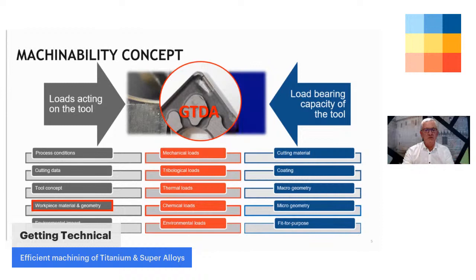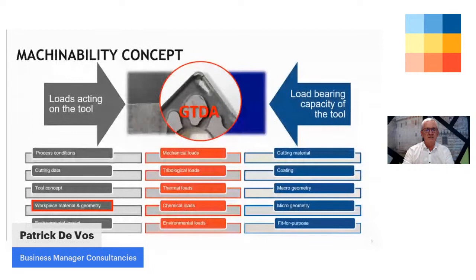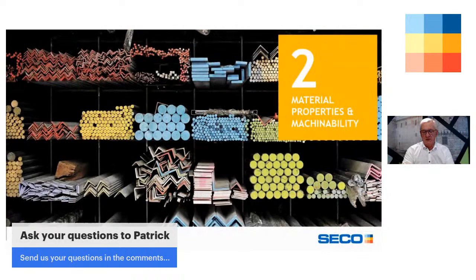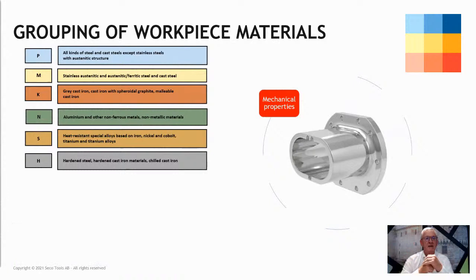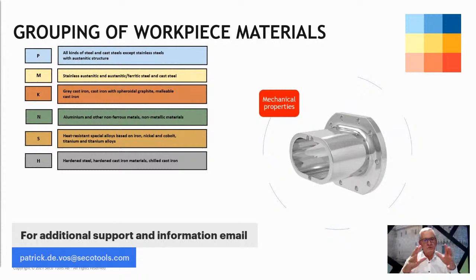Today it's about workpiece materials — specifically titanium and super alloys. When we look at whatever workpiece material we machine, people normally refer to the ISO system. We refer to P, M, K and S, H material groups. If we have an application, we find the material group and get advice on which tool to use. But what we sometimes forget is that this ISO system goes back to the mid-1970s, when basically the most machined materials were steel and cast irons.